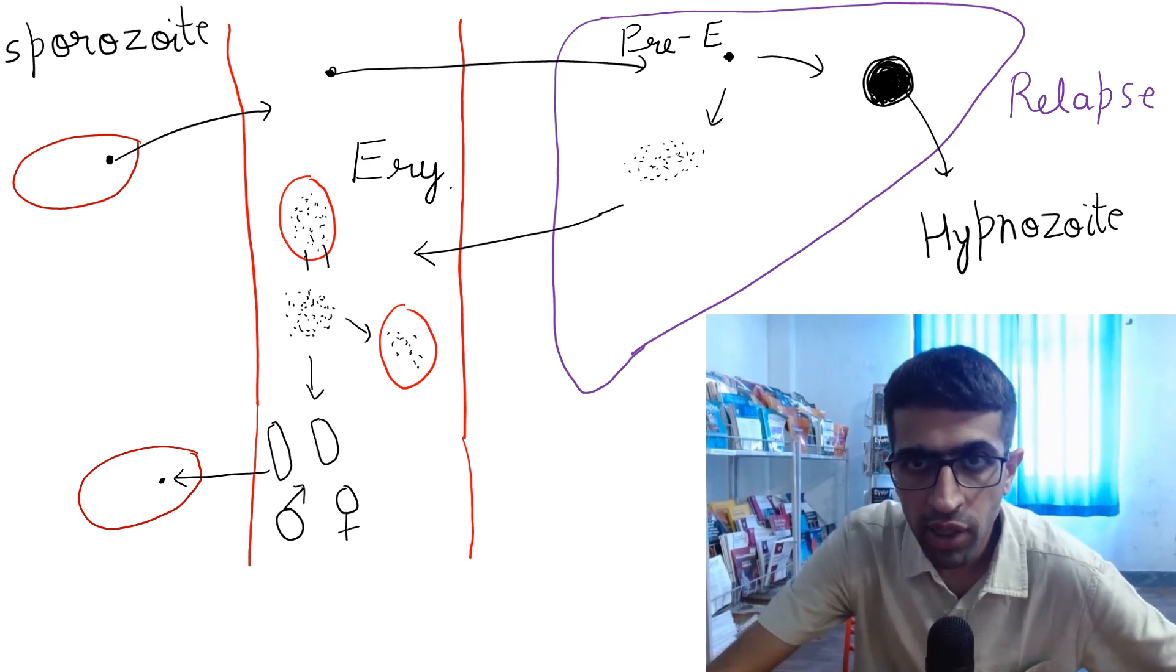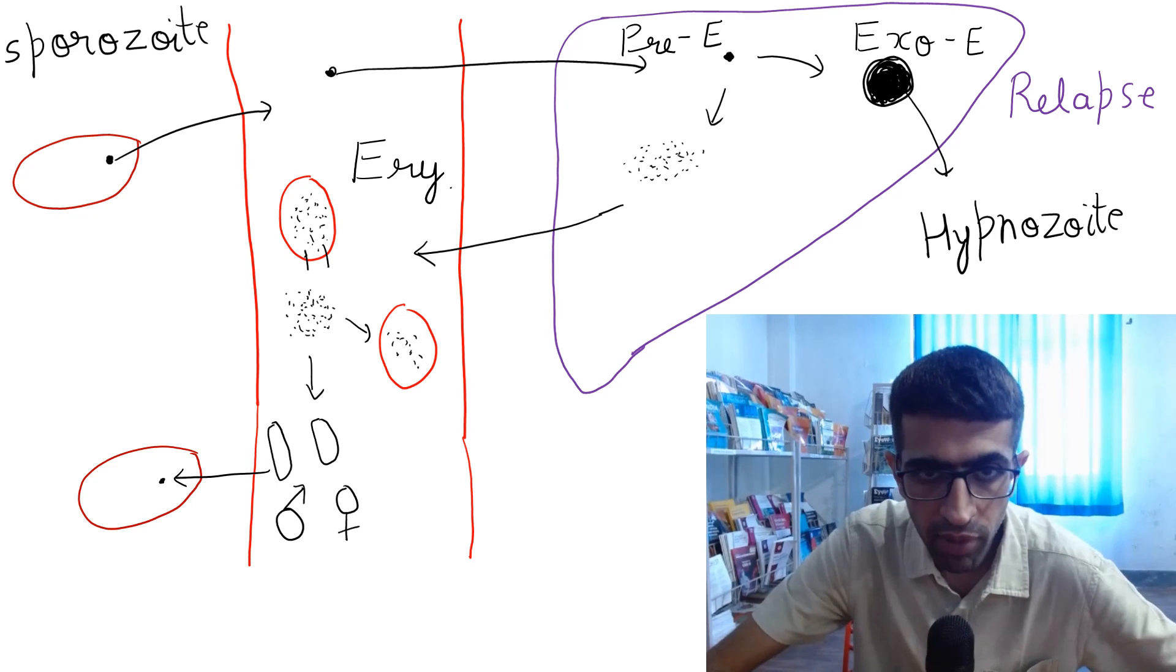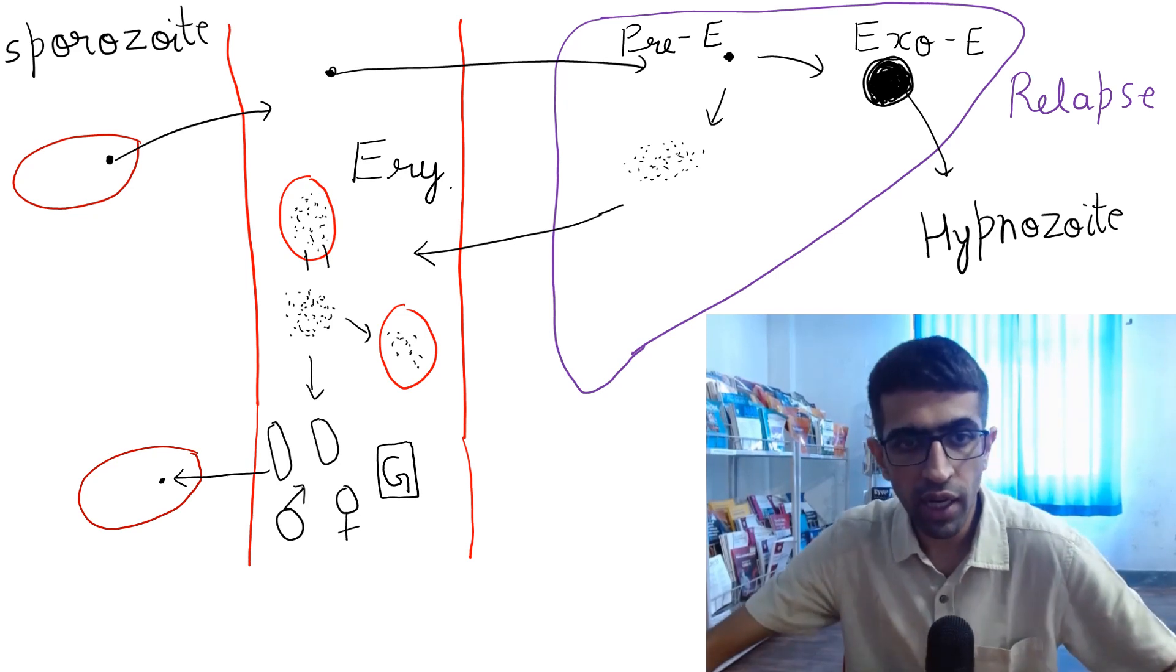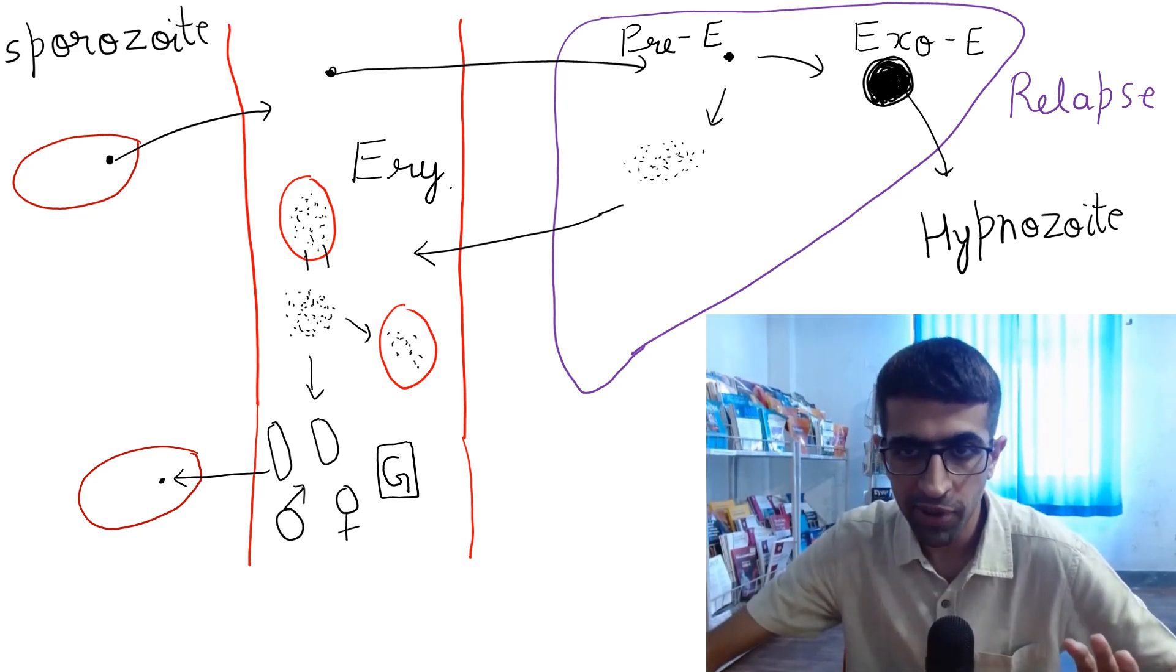This is hypnozoid; it is called exo-erythrocytic stage. This is erythrocytic stage, and here are male and female gametocytes—this is gametocytic stage. These are all the stages. You can understand in the next episode. Bye bye.